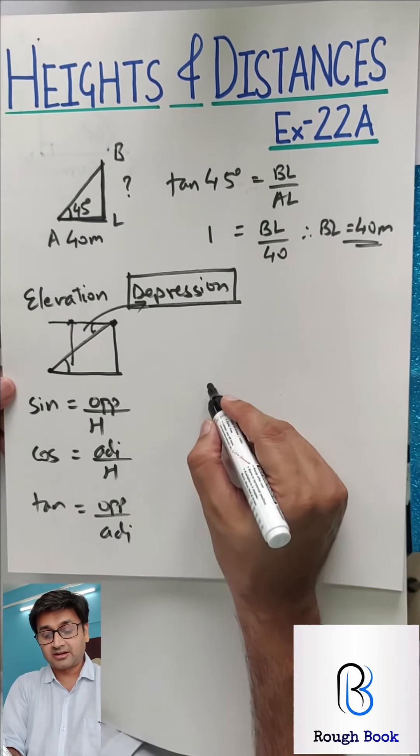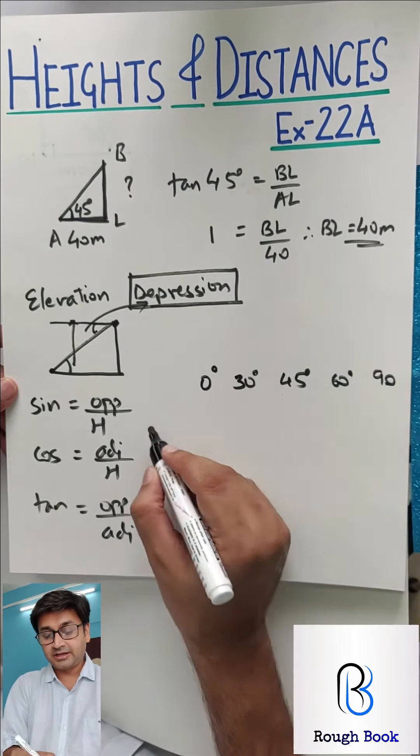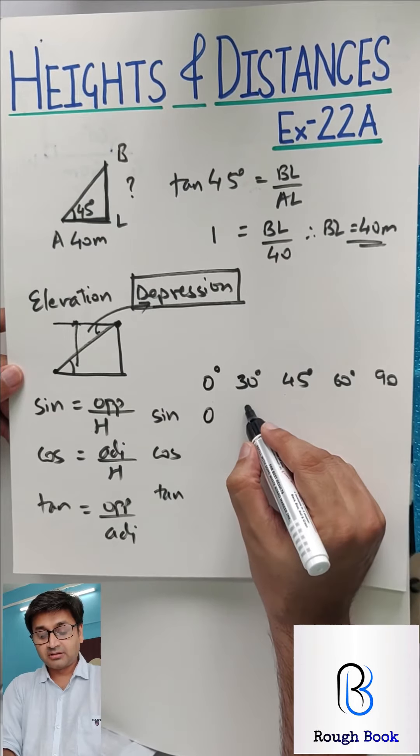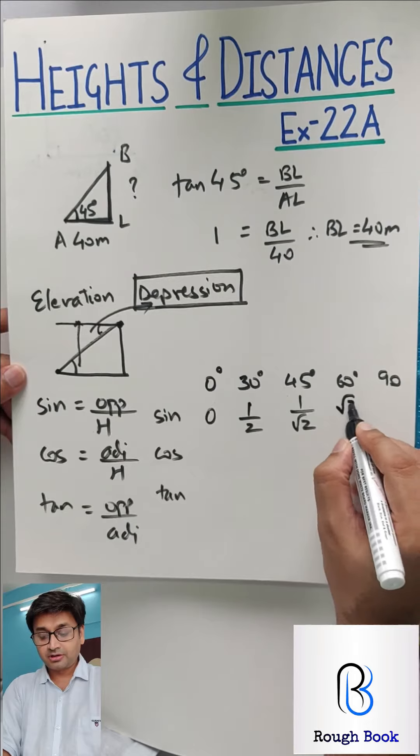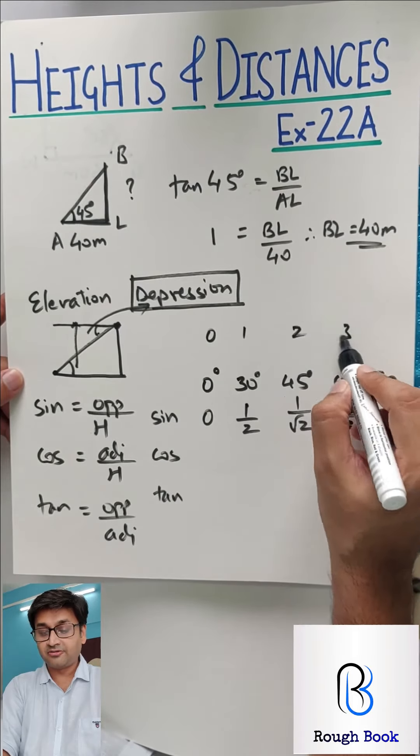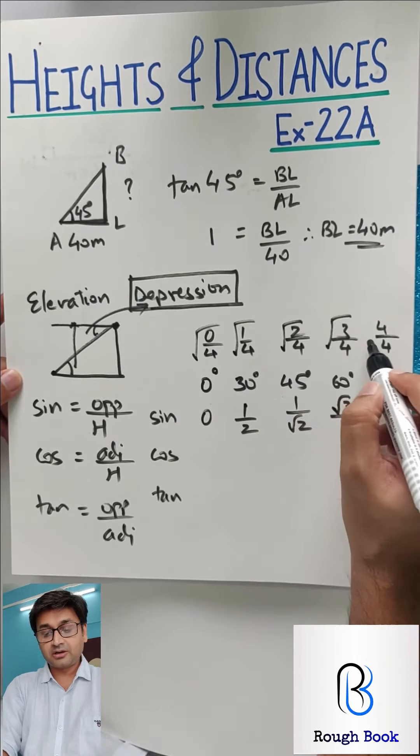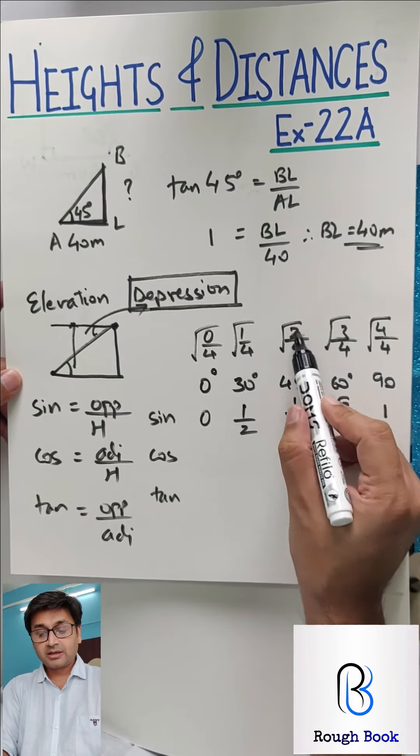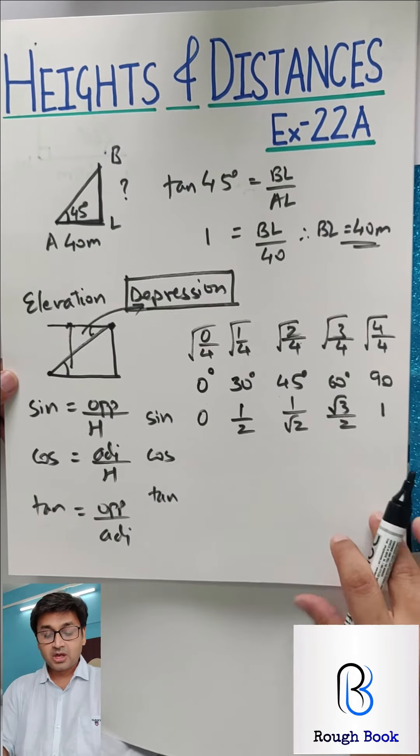So depending on what data is given and what you want to find, you are going to use these ratios. The next thing you are expected to know is the standard value for 0, 30, 45, 60 and 90 degrees. At least for sin, cos and tan. These three we need to know. So sin 0 is 0, sin 30 is half, 45 is 1 by root 2, sin 60 is root 3 by 2 and sin 90 is 1.